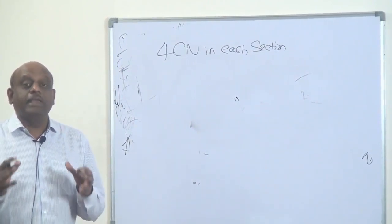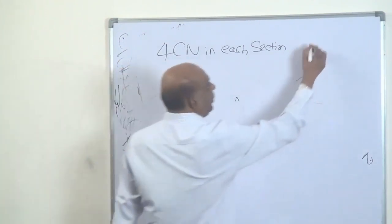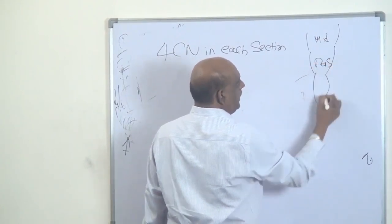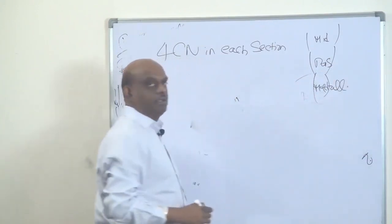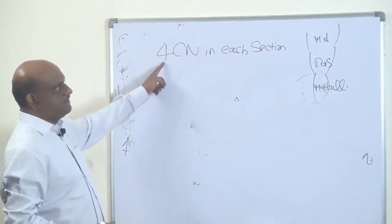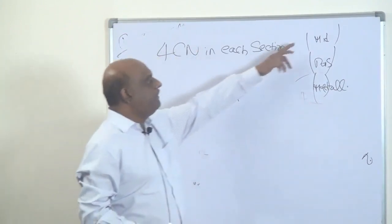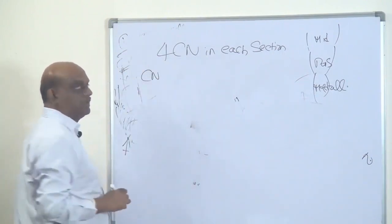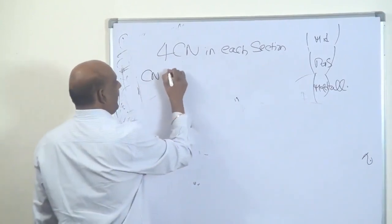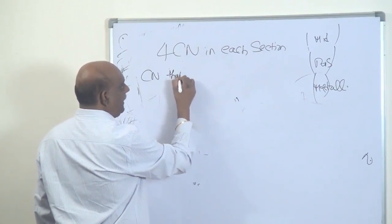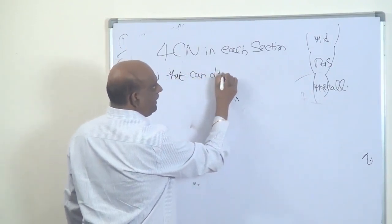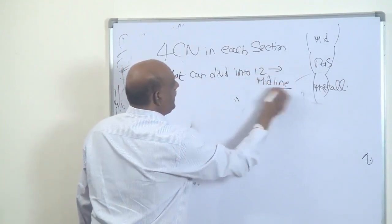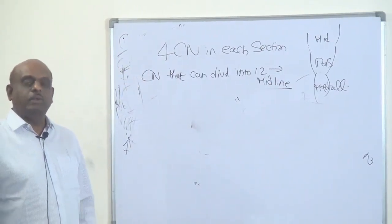I am trying to make it easy for you to remember and reproduce in the exam on brainstem strokes — how to localize the lesion based on clinical presentation. You have a midbrain, you have a pons, then you have a medulla. There are four cranial nerves in each section: midbrain, pons, and medulla. Cranial nerves that can divide evenly into twelve are all midline located. Tell me, what are the cranial nerves that you know?